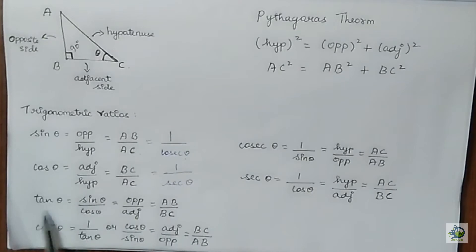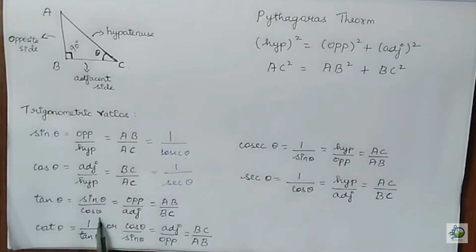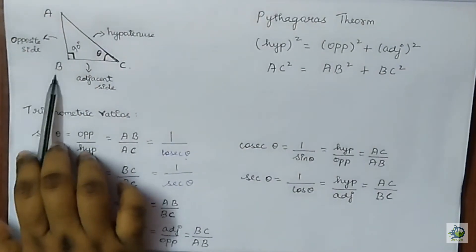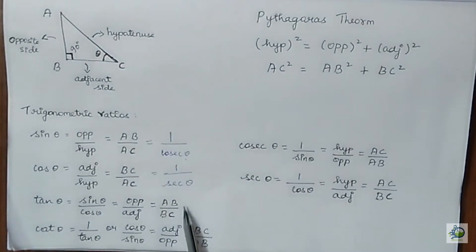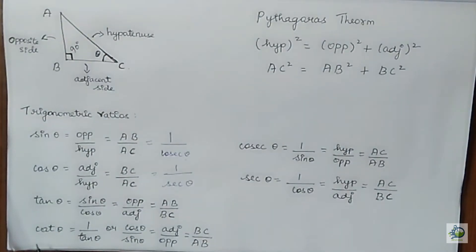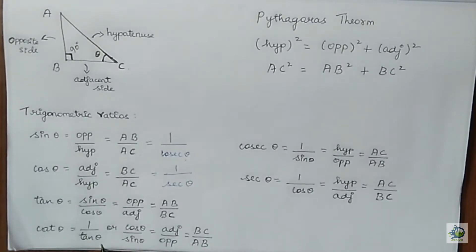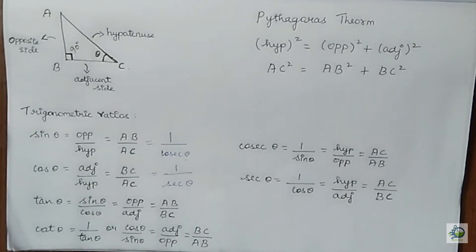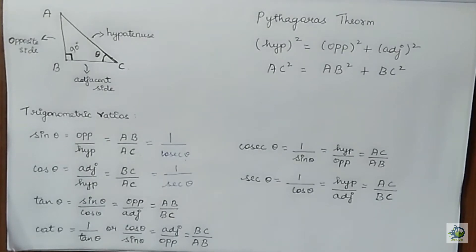Tan theta can be written as sin theta by cos theta, which equals opposite side by adjacent side. The opposite side is AB and the adjacent side is BC, so tan theta equals AB by BC. Next is cot theta, which can be written as 1 by tan theta, or equivalently cos theta by sin theta, which is adjacent side by opposite side — giving BC by AB.